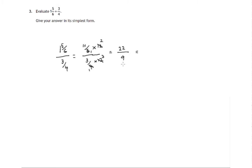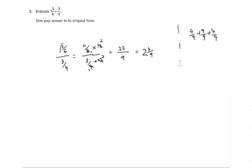Now, 9 goes into 22 two times. Two nines are 18, and to get up to 22 that's 4 left over, so there'll be 4 ninths left over. We're talking about 9 ninths and another 9 ninths — that's 18 ninths — and another 4 ninths. So that's 2 and 4 ninths.